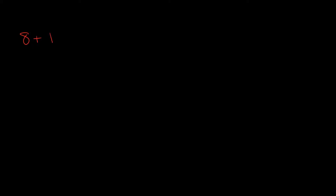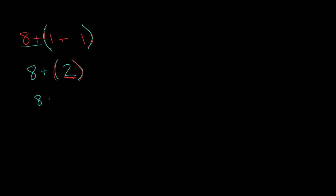So if we had 8 plus (1 plus 1), how would we simplify this expression? We go to our order of operations — we always start with parentheses. So let's simplify what's inside the parentheses first: 1 plus 1 equals 2. Now we're left with 8 plus (2). Can we simplify the number 2 anymore? No — 2 is as simple as it can get. So we drop the parentheses and we have 8 plus 2, which equals 10.